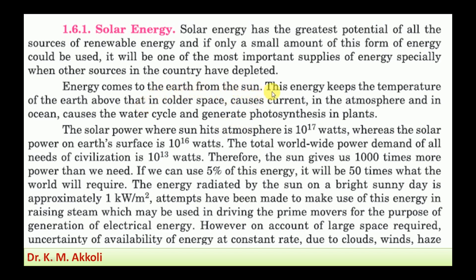Energy from the sun gives the Earth its temperature above colder space, causes currents in the atmosphere and oceans, drives the water cycle, and generates photosynthesis in plants. The water cycle works as follows: sun rays evaporate water from the Earth's surface and sea, the water vapor rises to form clouds, then falls as rainfall, is collected, and the cycle continues.